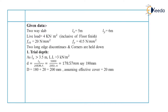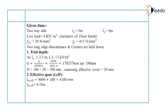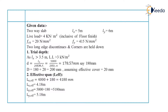Therefore, total depth is 180 plus 20 mm — the 20 mm being the assumed effective cover — giving a total depth of 200 mm. For effective span, using the formula: span plus effective depth, the effective span in the X direction is 4.18 meter and the effective span in the Y direction is 5.18 meter.